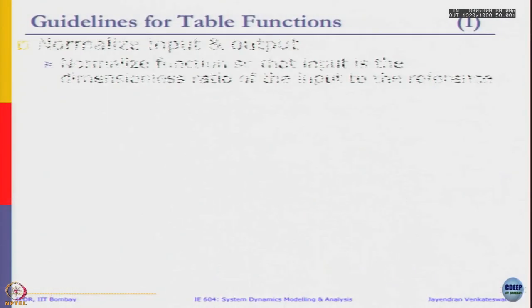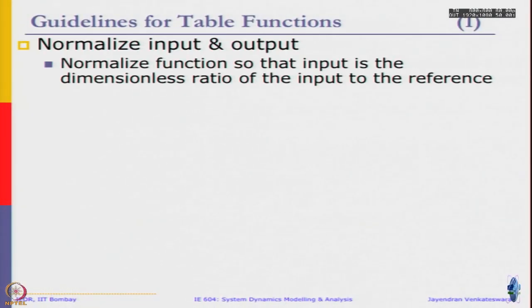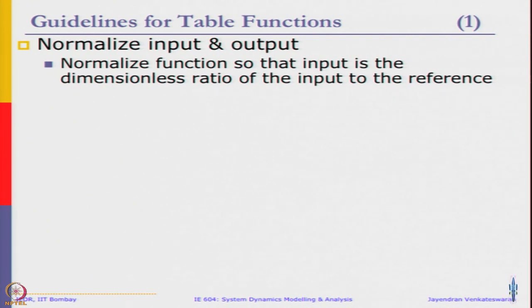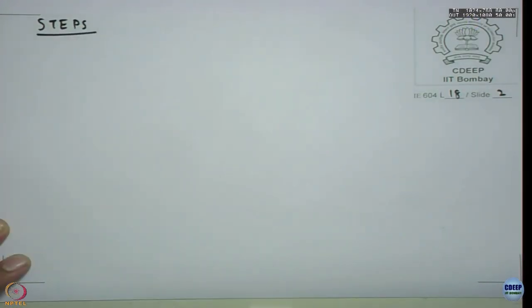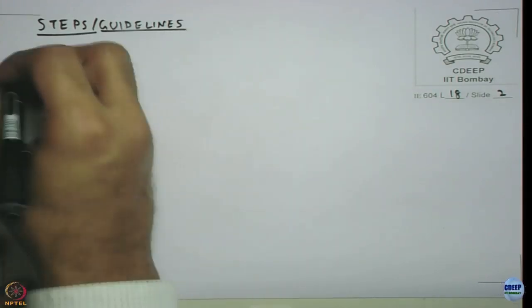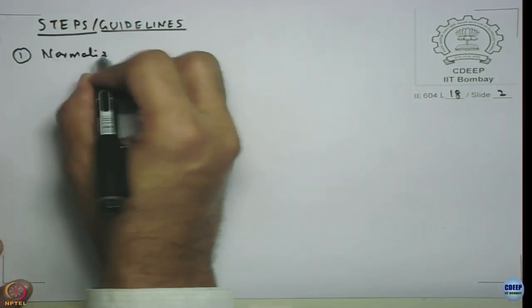We will follow a pretty laid-out procedure to guide our thinking process. Let me read out the guidelines. The first step is to start working with normalized input and output. In yesterday's example, if you had done a units check you would have found a units error because we had an input of density and an output that was a dimensionless fraction. So one way to overcome that is to start normalizing the input and output — normalizing means taking the dimensional ratio of the input to a reference value.